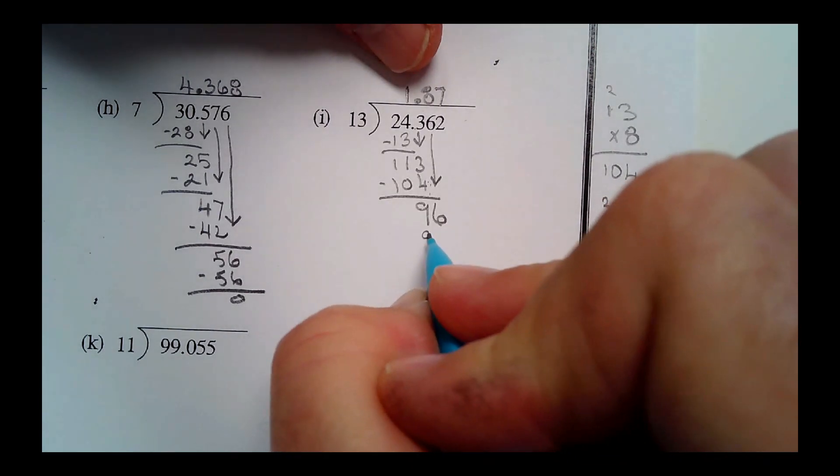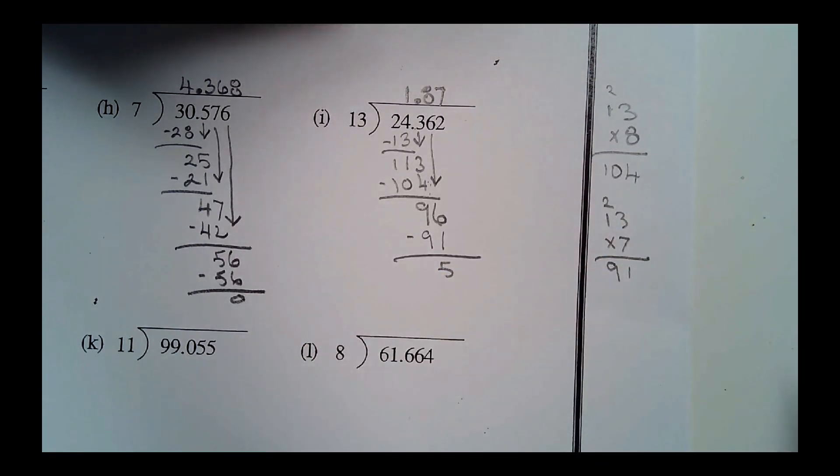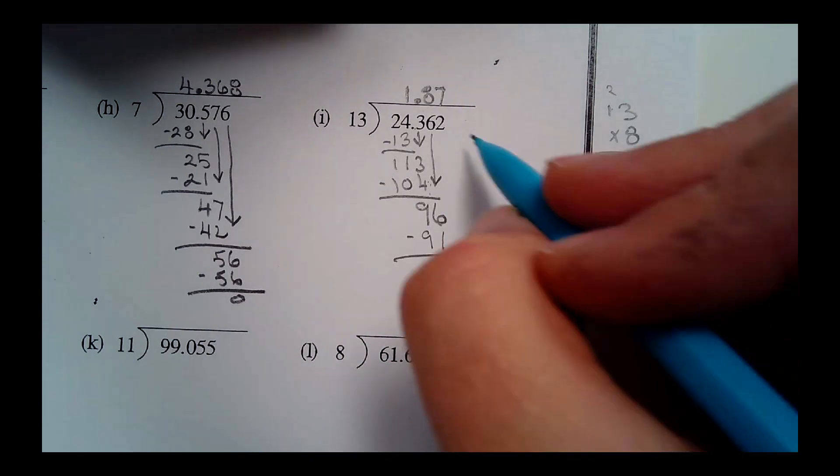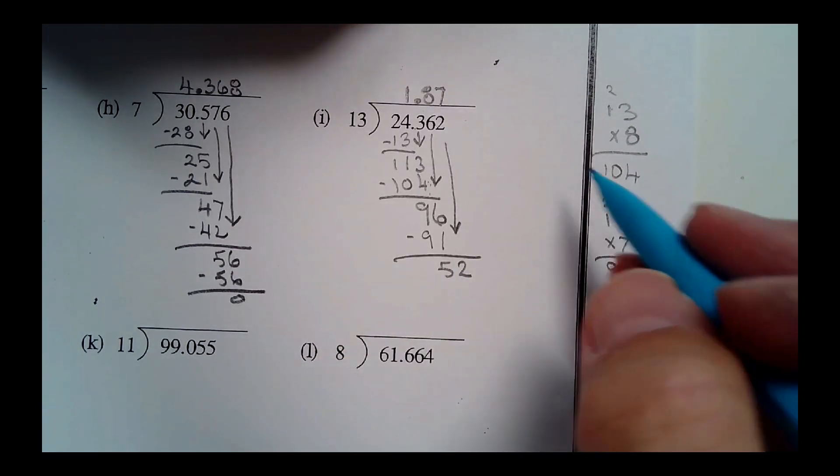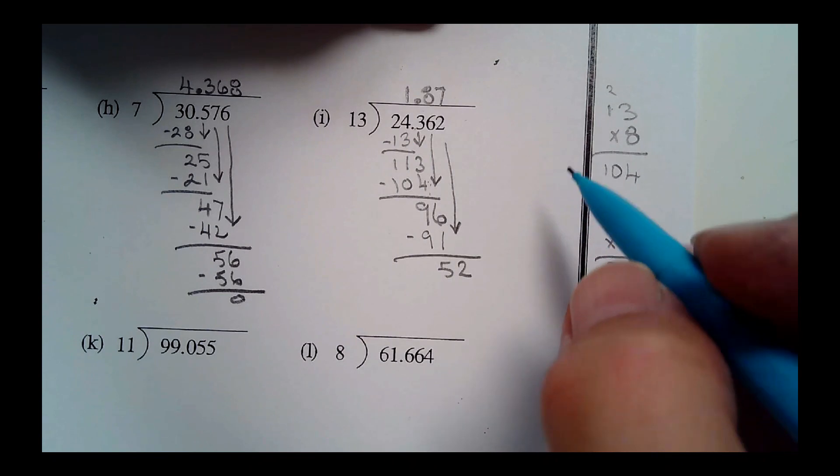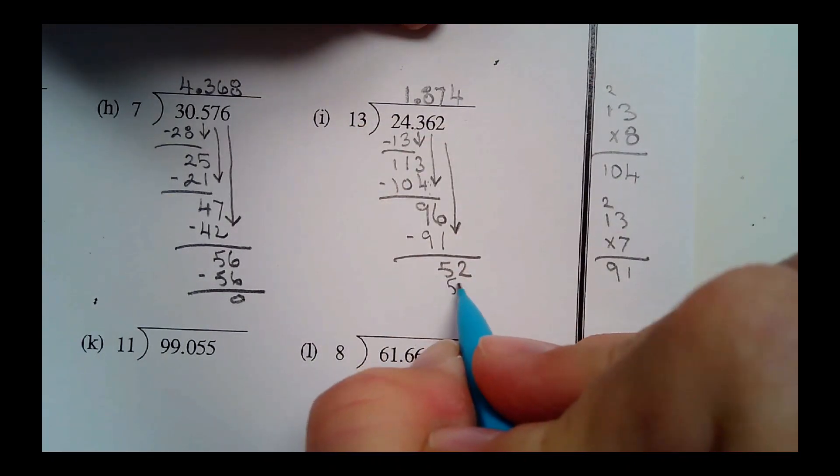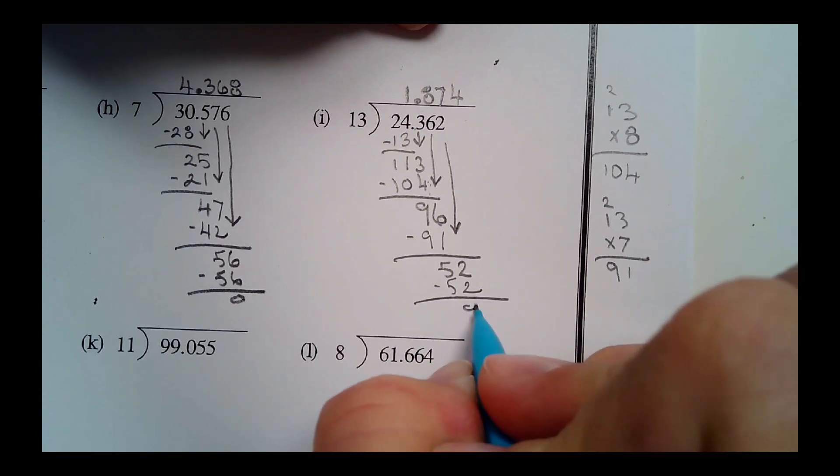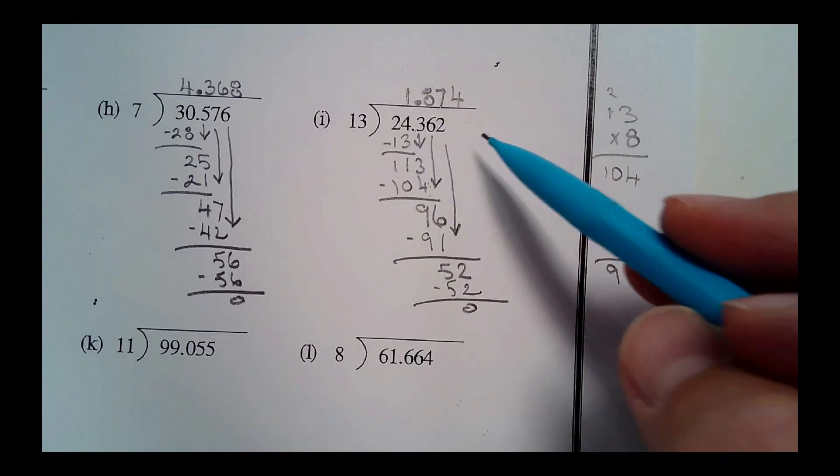Almost done. Now bring down the last digit, which is the two. How many times does 13 go into 52? Well, that goes in evenly four times with nothing left over, no remainder. And I don't think any of these have a remainder. So I think you guys should come out—if you just keep working your way through the digits, you'll come out evenly all the way.